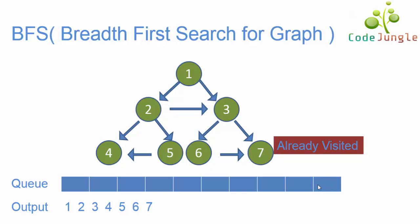There are no more elements in the queue, so the queue is empty and the algorithm stops. This is the output we got, and this is how we execute the BFS algorithm on a graph.